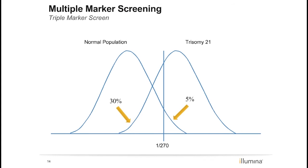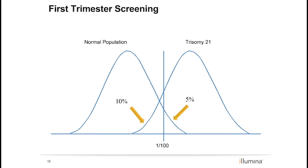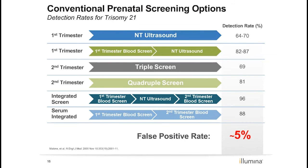This next slide shows the overlap areas for a test with better sensitivity, such as the first trimester screen. We continue to make improvements to the rate of false negative results. The goal is to continue improving the separation of these curves to decrease both false positives and false negatives.